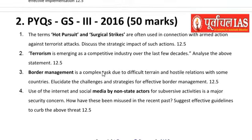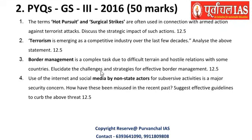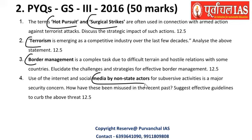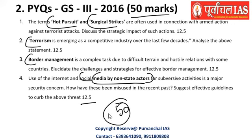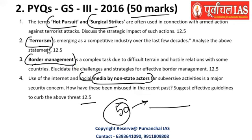Moving on to the 2016 paper, four questions came for 50 marks. These questions were related to hot pursuit, surgical strikes, terrorism, border management, media and non-state actors — specifically how non-state actors are making use of social media. Each question was for 12.5 marks, totalling 50 marks. This is a great cost-benefit as far as this subject is concerned, and these topics appear to be directly picked from the syllabus.